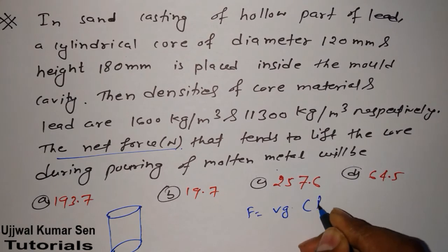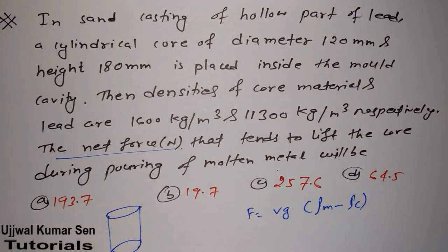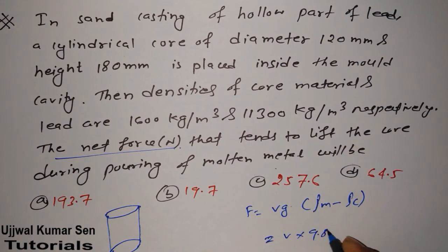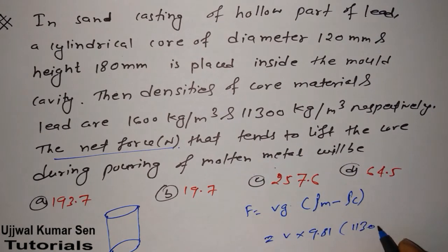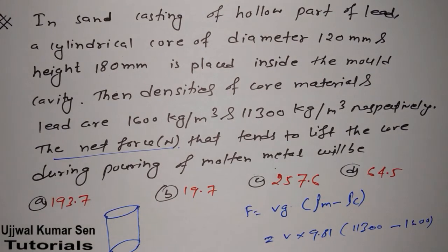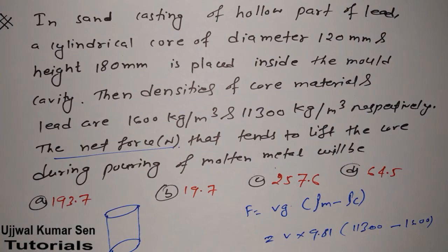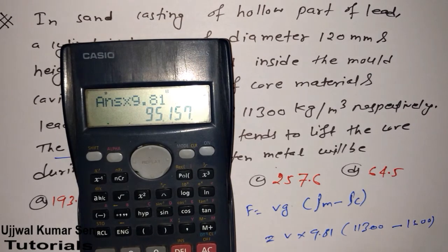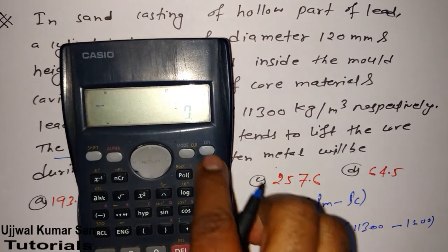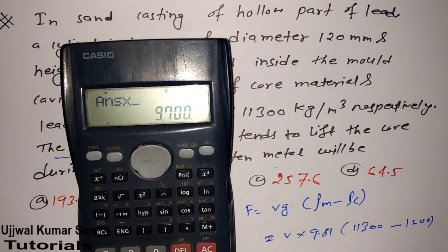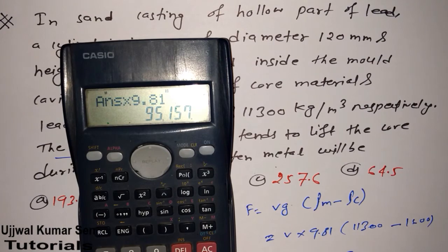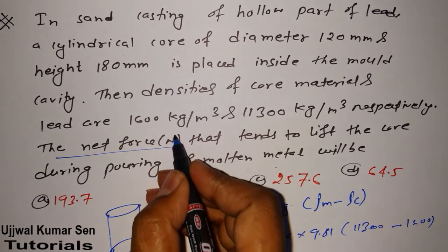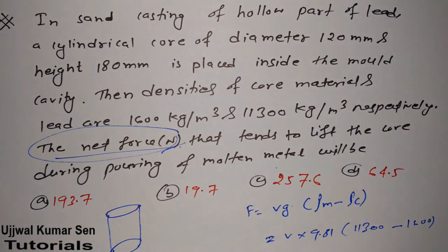We don't know V yet — we have to find it. g is 9.81, ρm is 11300, and ρc is 1600. So we can compute (11300 minus 1600) equals 9700, and 9700 times 9.81 gives us 95157. Remember all values are in SI units, so the force will be in newtons.